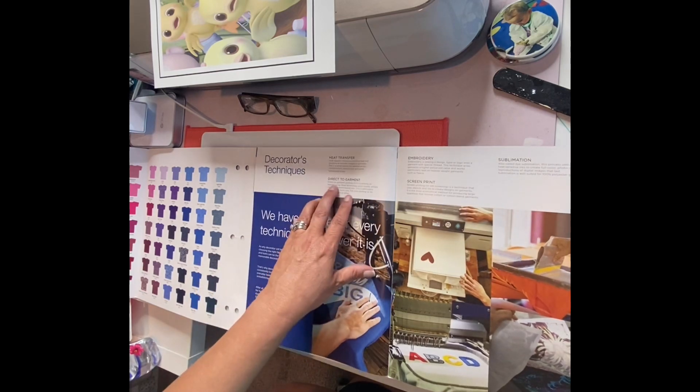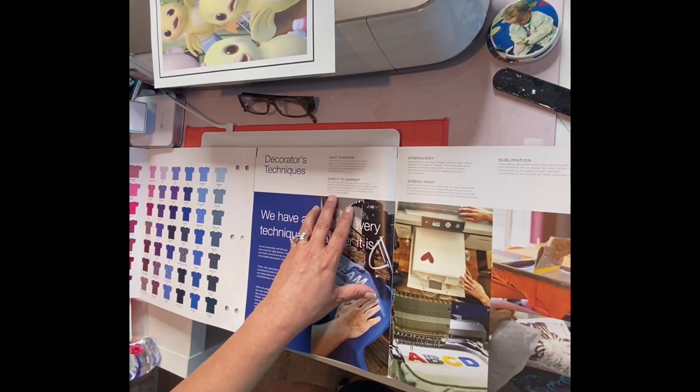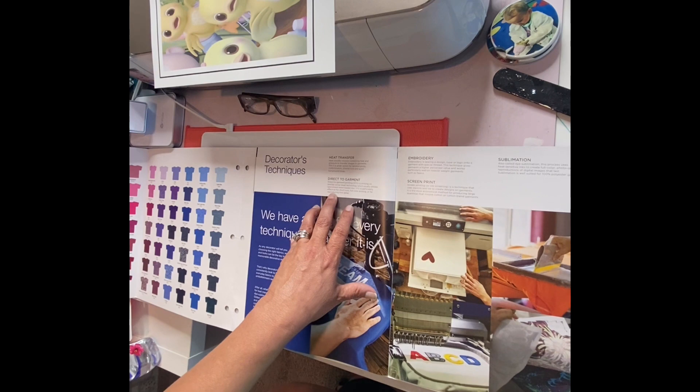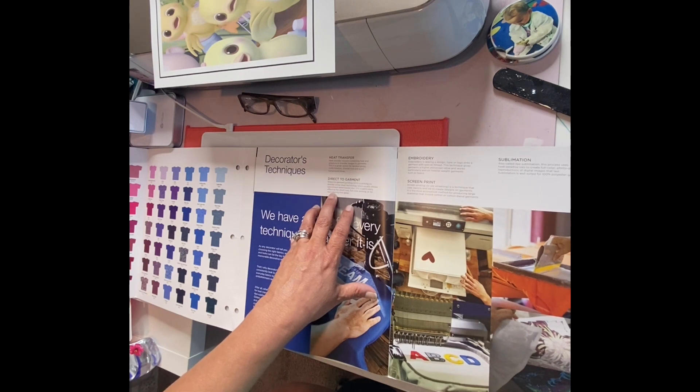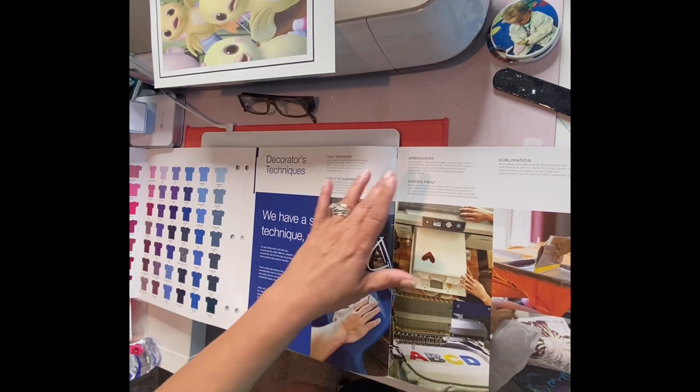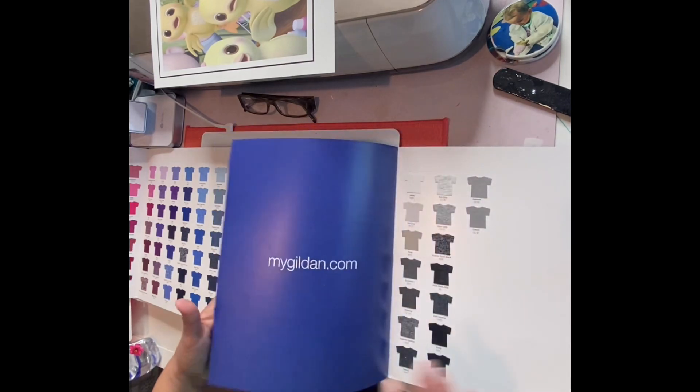Okay, the DTG is direct to garment. So direct to garment printing textiles using inkjet technology, water-based direct to garment. So it's printing directly on your garment: embroidery, screen print, sublimation, it tells you all those things.